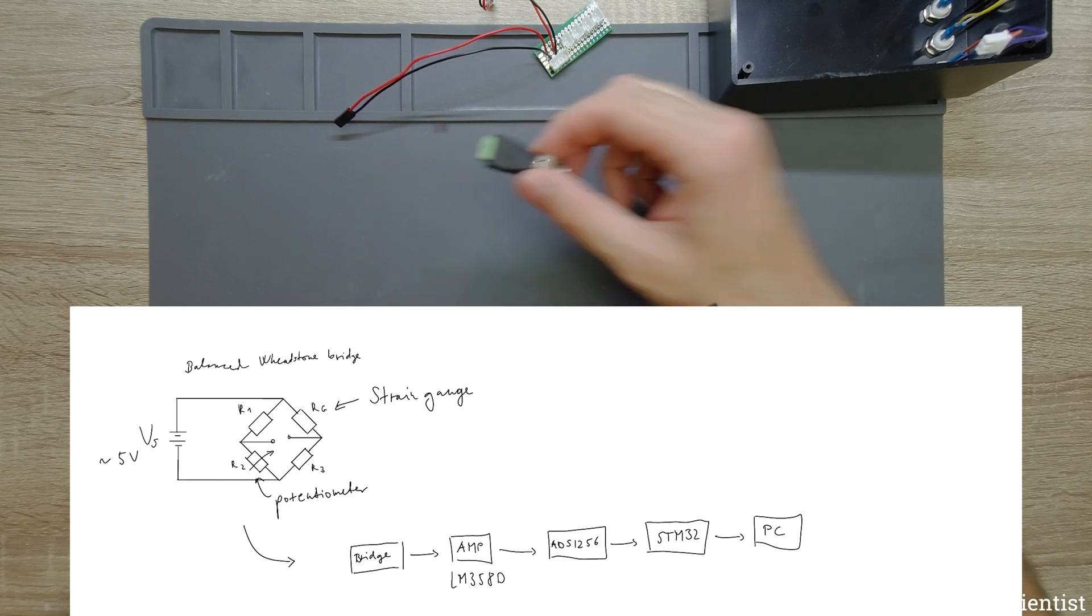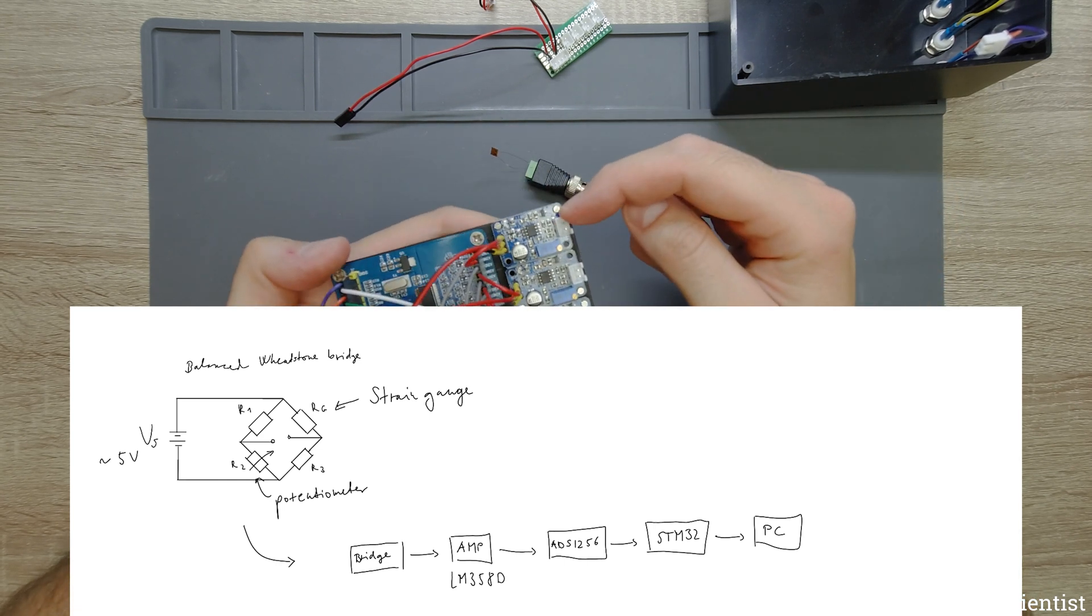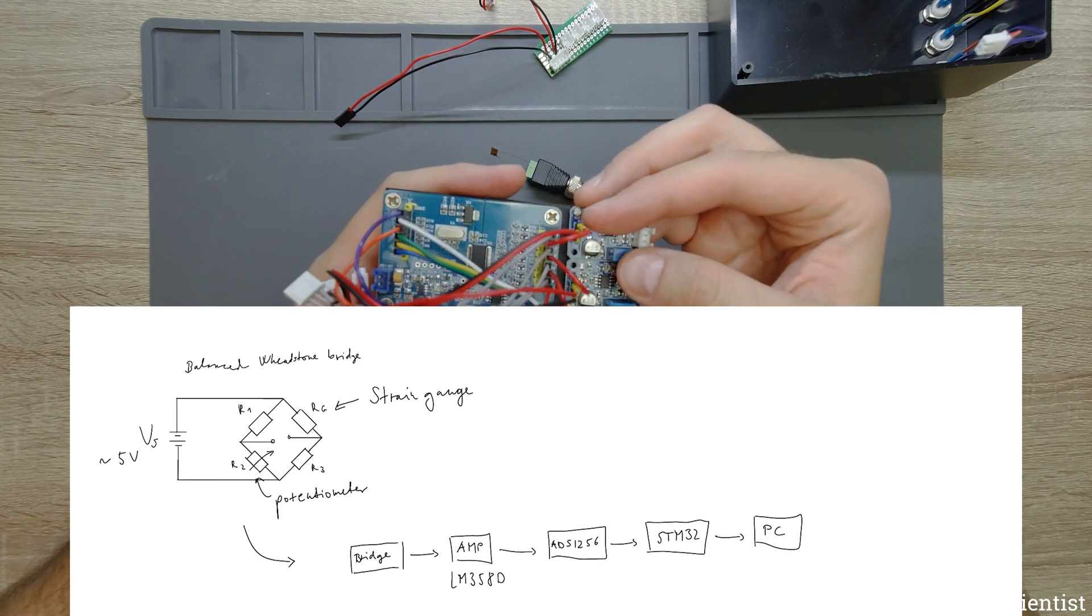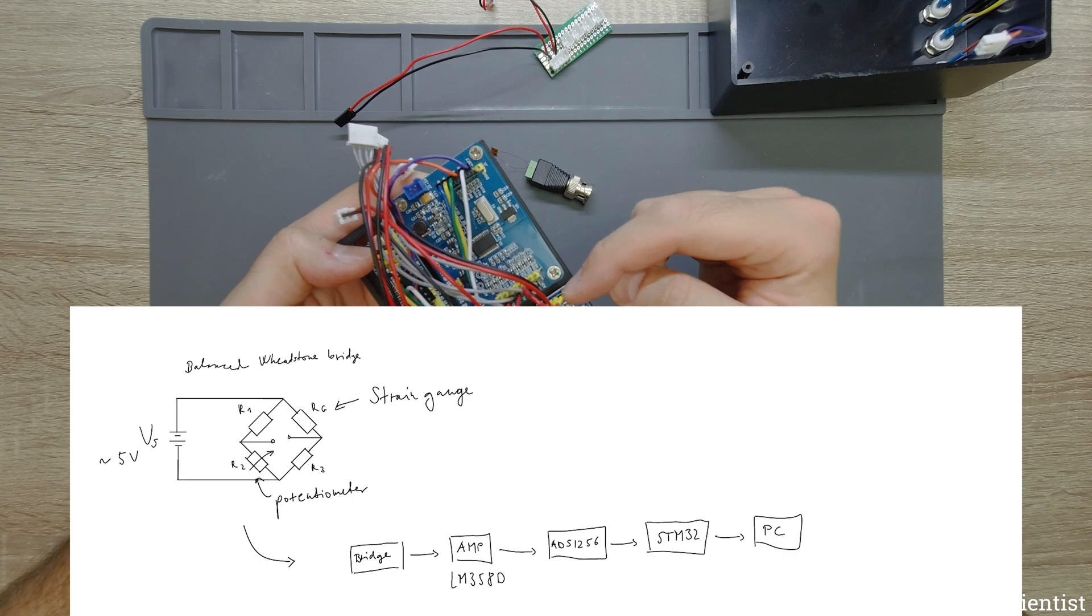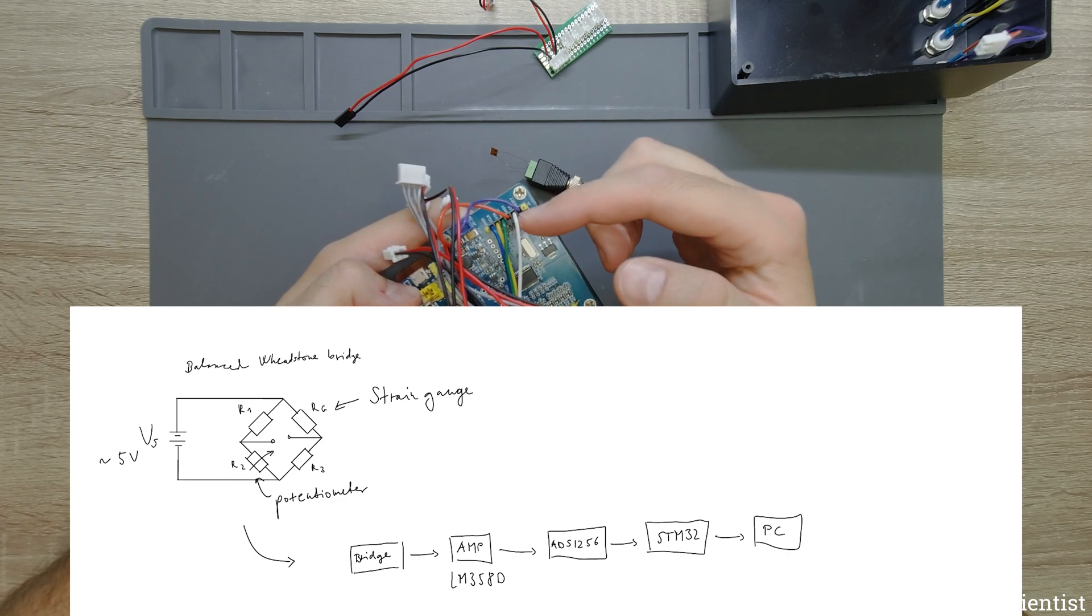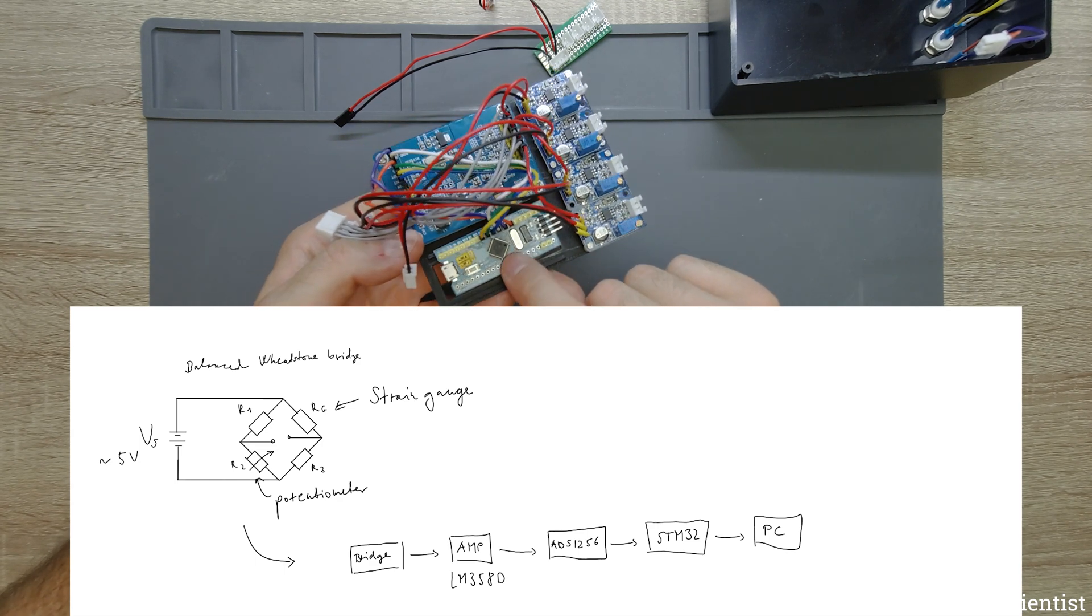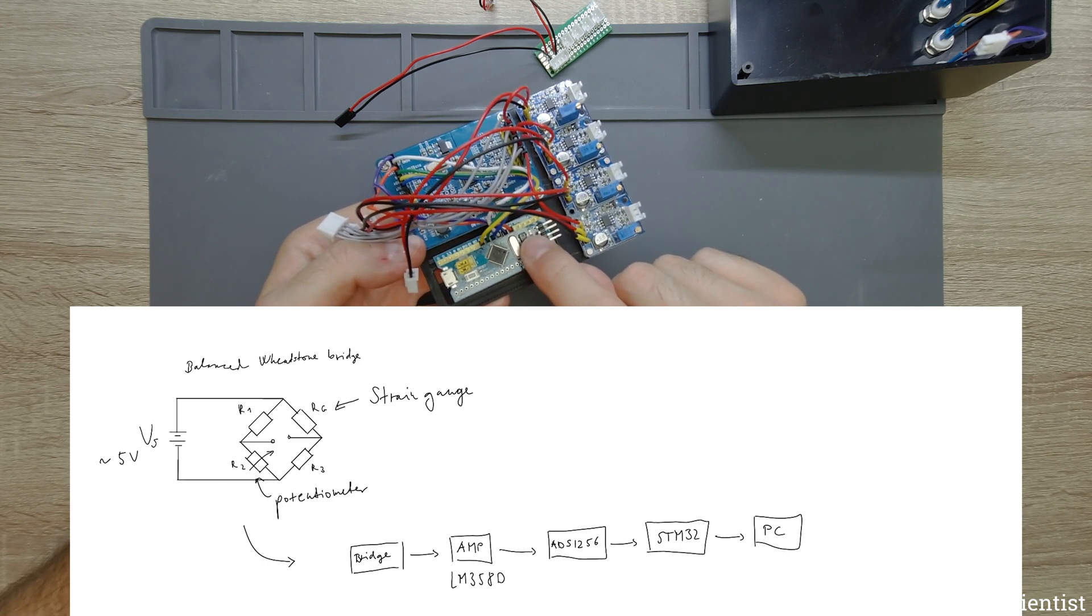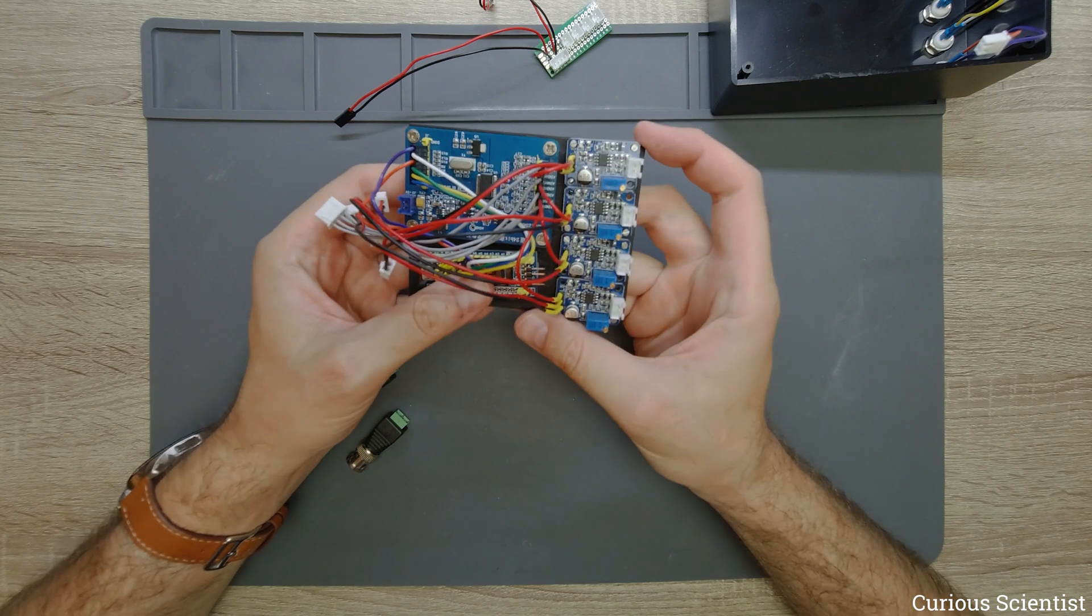When we deform this, it will change its resistance. This circuit will convert the change of resistance into change of voltage. The change of voltage will be measured by the ADS1256 and the voltage will be converted into digital signal. This digital signal through the SPI bus will go to the STM32 circuit, then it will be processed just a little bit, and then that will be sent to the computer.